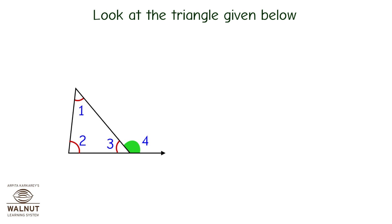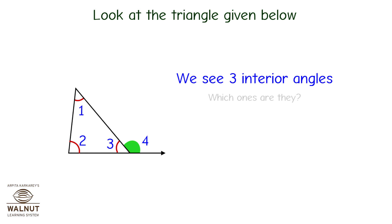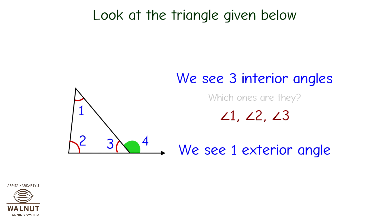Look at the triangle given below. We see three interior angles — which ones are they? Angle 1, angle 2, angle 3. We see one exterior angle — which one is it? Angle 4.